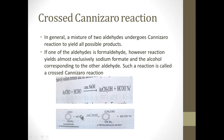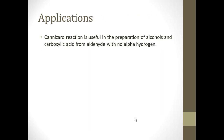In the crossed Cannizaro reaction, formaldehyde is always one aldehyde; the other is a different aldehyde. We will certainly get sodium formate or sodium salt of formic acid as one product, and the alcohol corresponding to the other aldehyde as the second product. The Cannizaro reaction is useful in the preparation of primary alcohols and carboxylic acids from aldehydes with no alpha hydrogen.